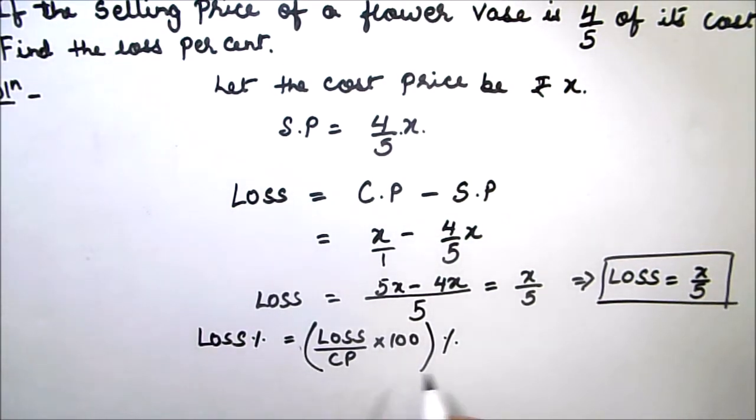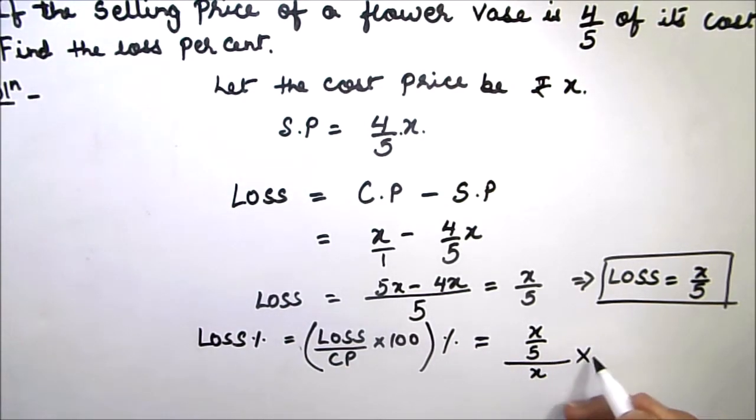We will put the values here. Loss is x by 5 divided by cost price x times 100 percent.